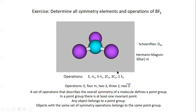Now we have found all symmetry operations and elements. Let us practice by determining all possible symmetry operations for a particular molecule. We have previously used the BF3 molecule, so let us stick with that. BF3 is a trigonal planar molecule. Certainly we will have the identity operation, expressed by the symbol E in both formalisms — or just 1 in the Hermann-Mauguin formalism.